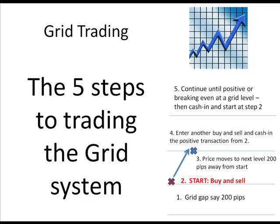There are five steps to trading the grid system. The first step is to establish a grid size that you're going to be using for your trading. In this example, we're going to use 200 pips as a grid size, so the gaps between the grid lines will be 200 pips. We'll go into how you establish that in later videos.